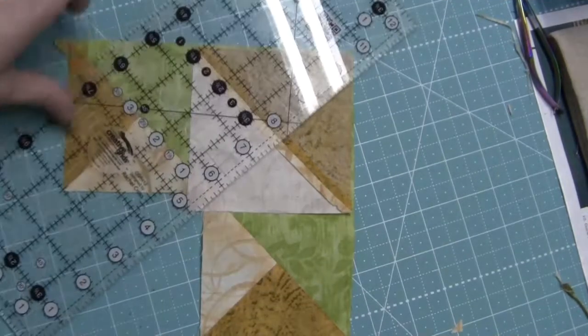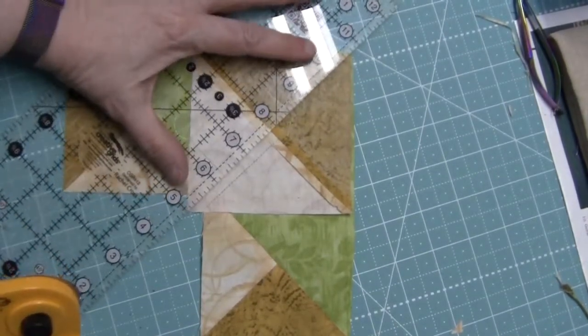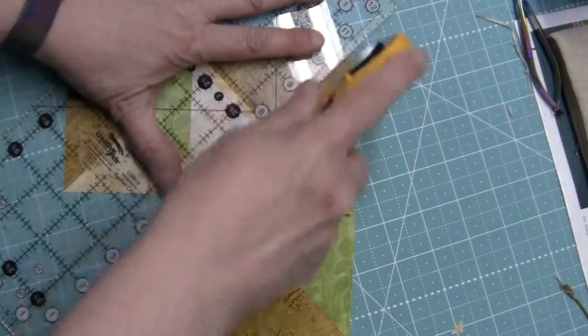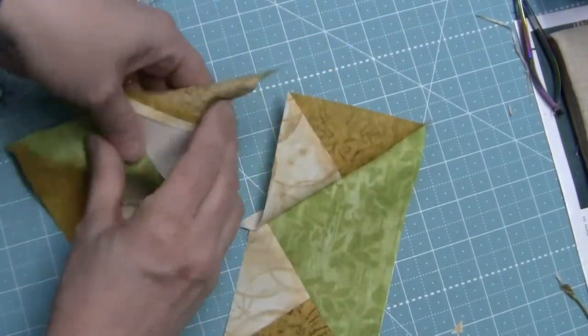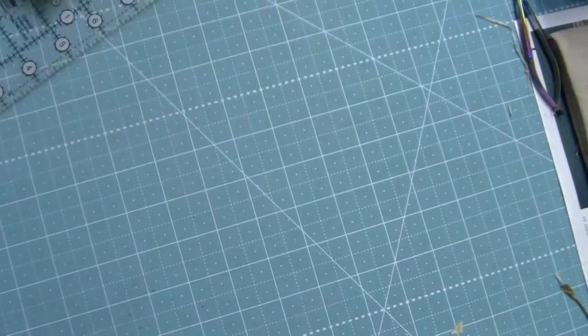There you see it stitched in and then as we cut them apart just like before, here's going to be two geese and I'll come back when everything's pressed.